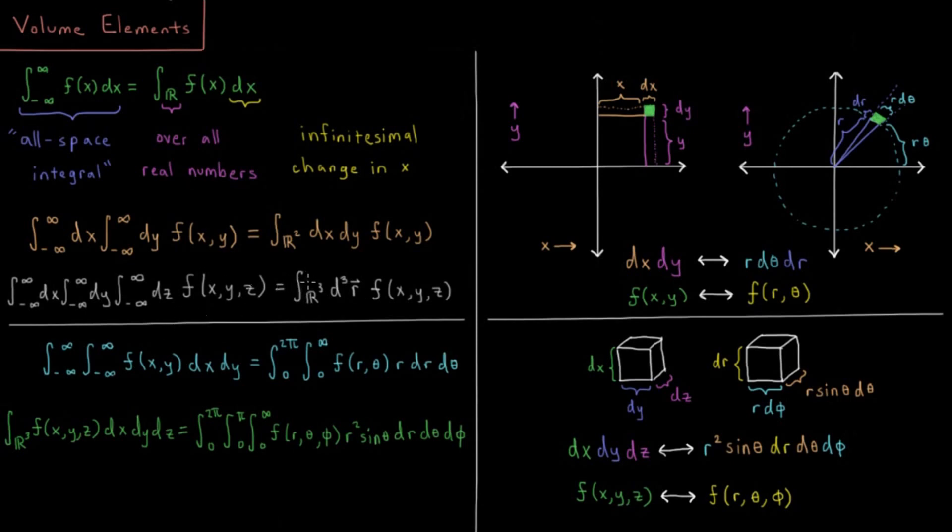That is in Cartesian, but sometimes it's much easier to express functions as a function of polar coordinates in two dimensions or spherical polar coordinates in three dimensions. Instead of integrating from negative infinity to infinity in x and y, as we saw in earlier videos on different coordinate systems, we'd integrate θ from 0 to 2π and we'd integrate r from 0 to infinity, both the ranges of those two variables.